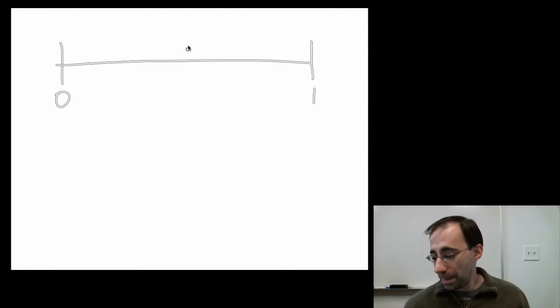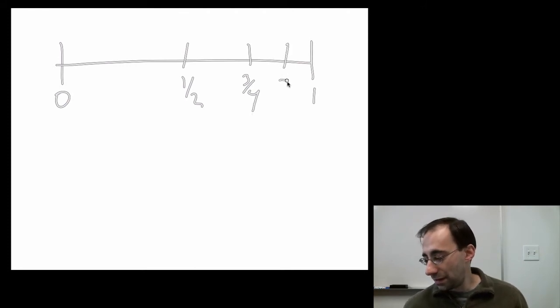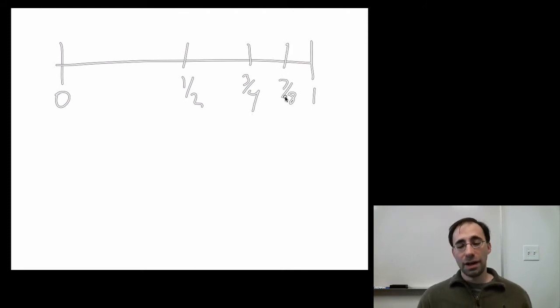So in the first moment, you end up at 1 half. In the second moment, you end up at 3 quarters. In the third moment, you end up at 7 eighths. And so on and so on forever. Right? 15/16 and so on. Do you ever reach 1?